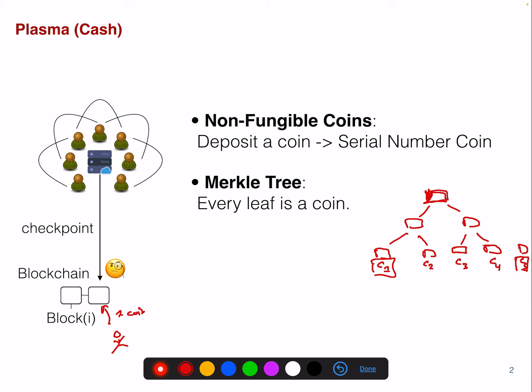You cannot divide this coin. If you want to send coin C5 from A to B, you have to send it in its entirety. You cannot divide it — you have to send the whole coin.